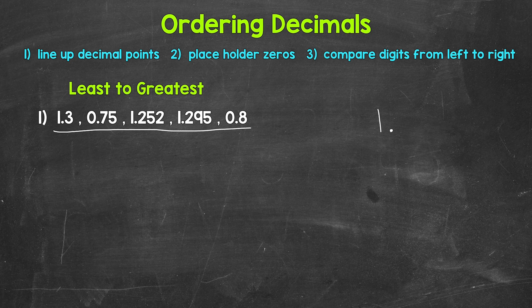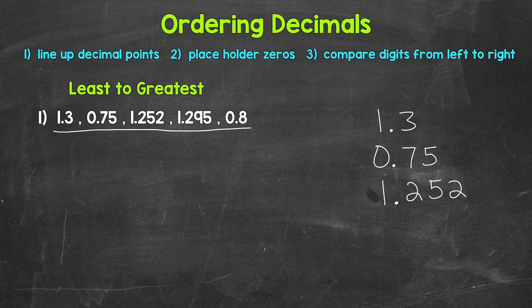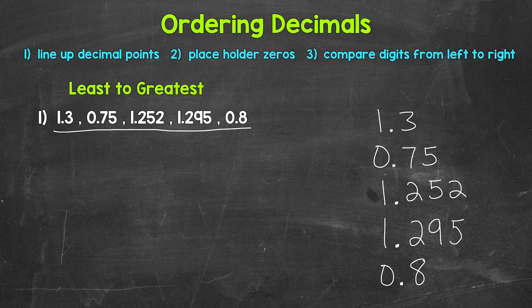We'll start with one and three tenths. Then we have 75 hundredths. Then we have one and 252 thousandths. Next, we have one and 295 thousandths. And then lastly, we have eight tenths. Now this does look a little off since we have numbers going to different places. So what we can do is use placeholder zeros. Remember, zeros to the right of decimal digits do not change the value of the decimal — it gives us an equivalent decimal.